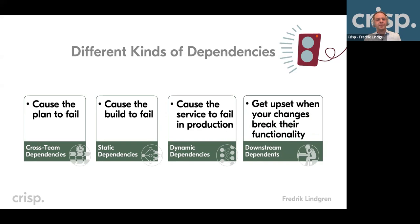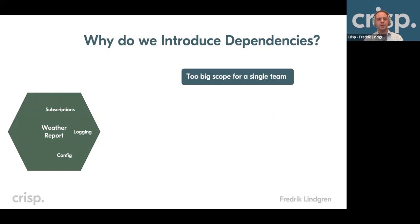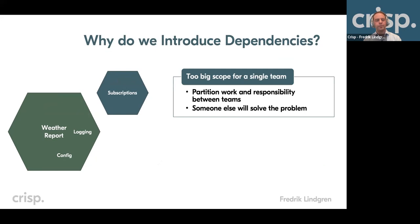So with all these problems, why do we introduce dependencies in the first place? Take this example of a microservice apparently doing something with weather reports, but also having some subscription stuff, logging, and config. One reason we introduce dependencies between teams and services is that the total application scope is too big for a single team, so we partition the work and responsibility between teams — and that's nice because then someone else will solve that problem.